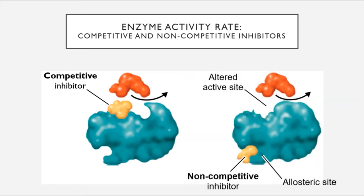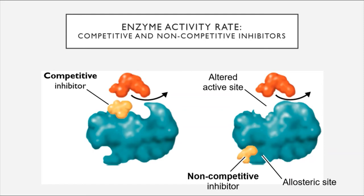The other type of inhibitor is called the non-competitive inhibitor. These molecules bind to the enzyme not at the active site, but at something called the allosteric site. The allosteric site is separate from the active site, but when the non-competitive inhibitor binds there, it can change the shape of the active site so that the substrate can no longer fit. To continue with the analogy, this would be like if you came into class and your chair was empty, but one of the legs was missing—technically the site is available, but its shape is no longer compatible with your ability to interact with it.